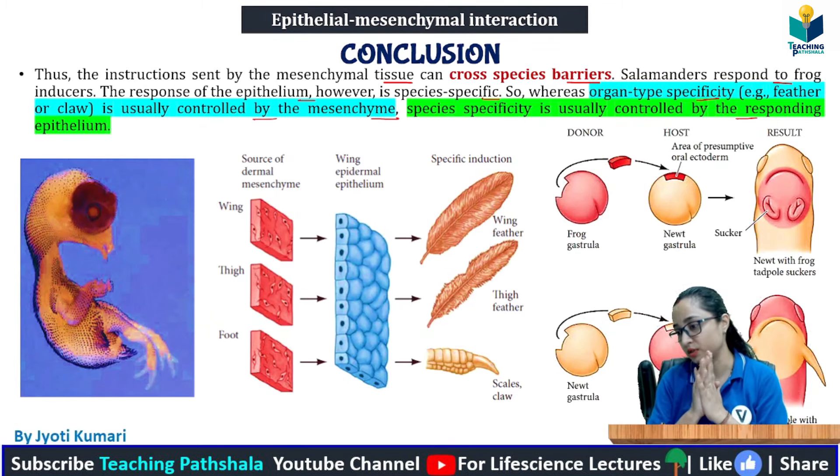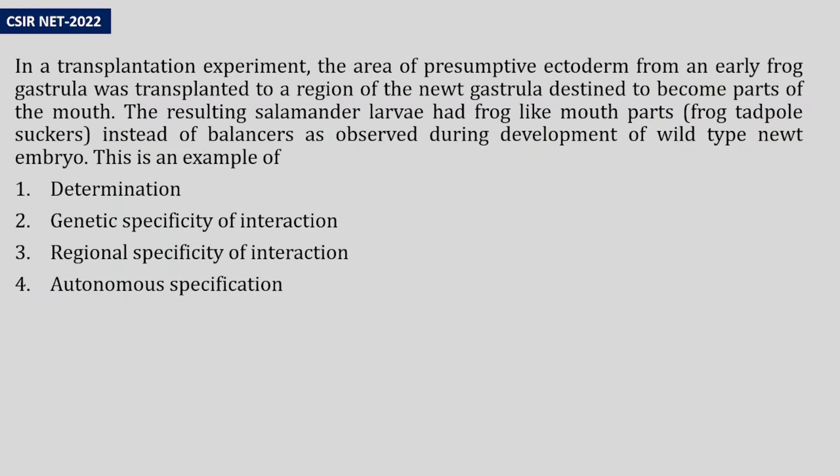This is the final conclusion. So, in genetic specificity of induction, maximum control is by the ectoderm. And in regional specificity of induction, maximum control is by the mesenchyme. This is the topic we dealt with: Genetic Specificity of Induction, as compared to our last video on Regional Specificity of Induction — both being types of epithelial-mesenchymal interaction.